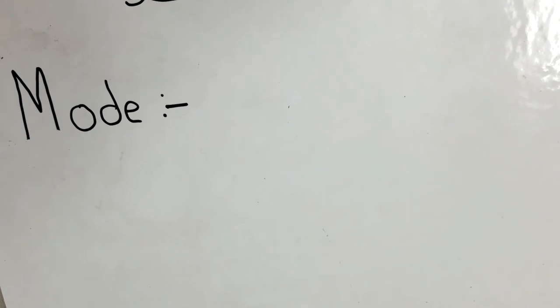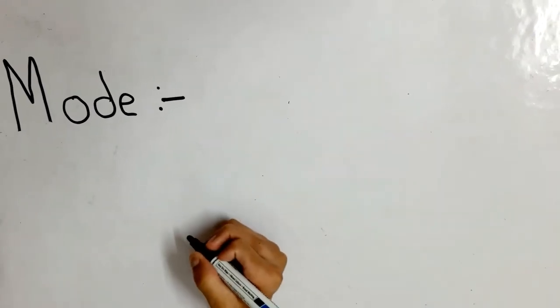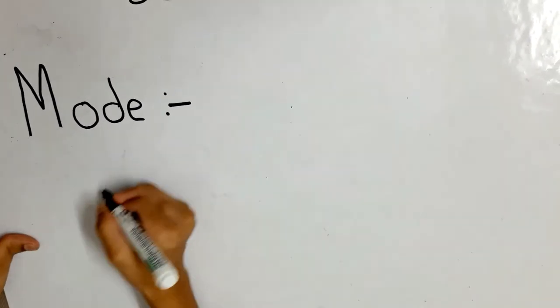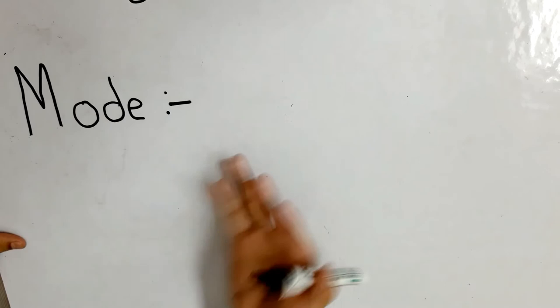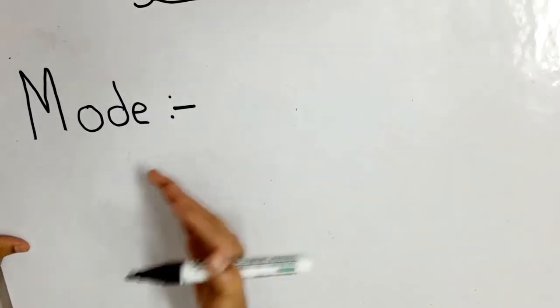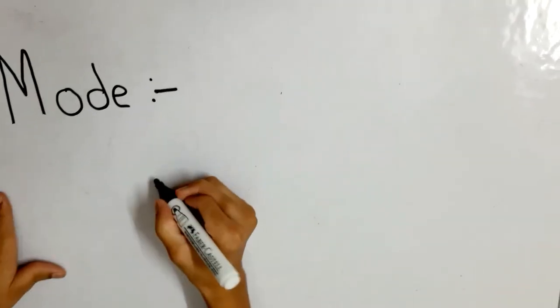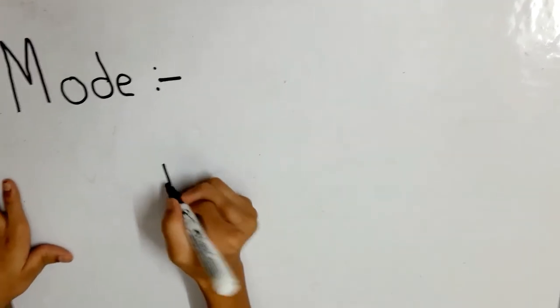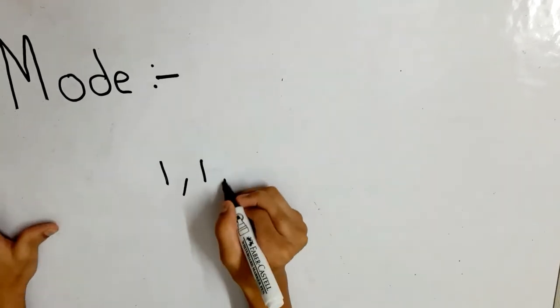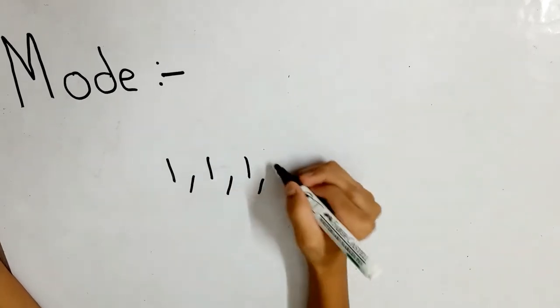The definition of mode is: the mode of a set of observations is the observation that occurs most often. We will take an example — suppose the question is to find the mode of a given set of numbers.